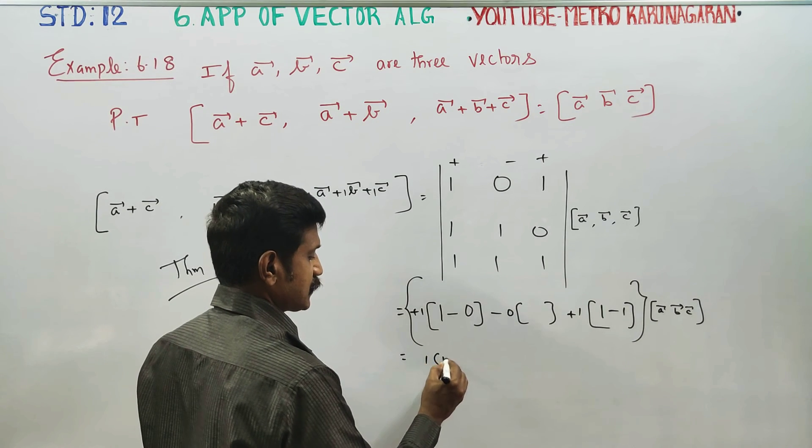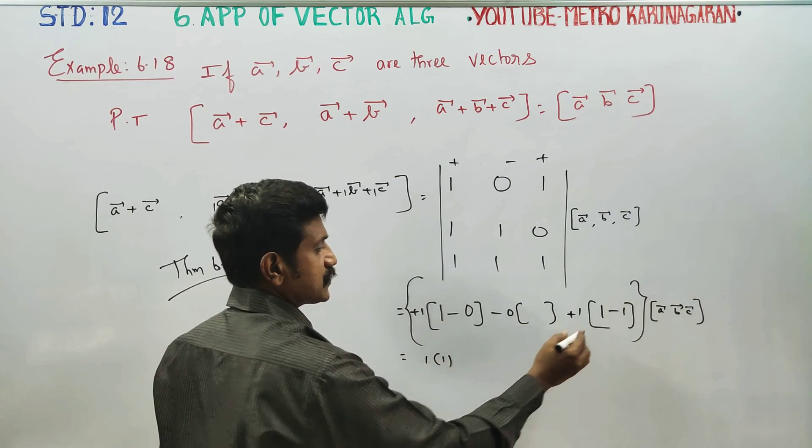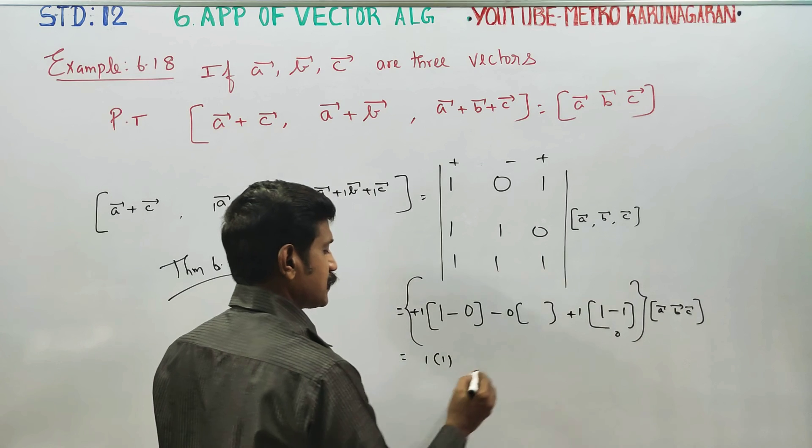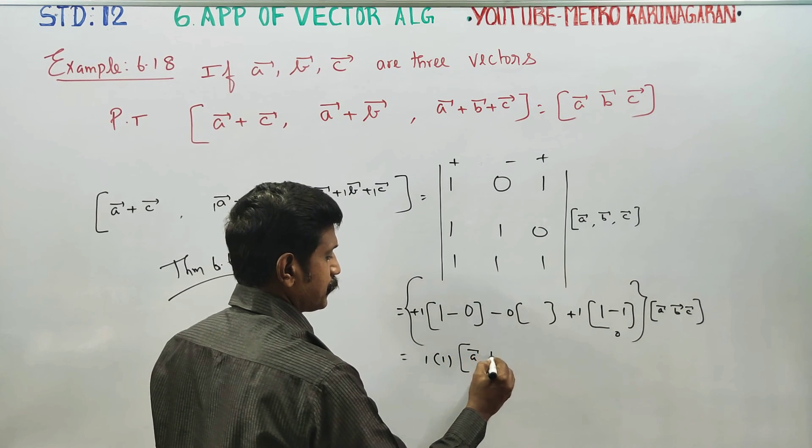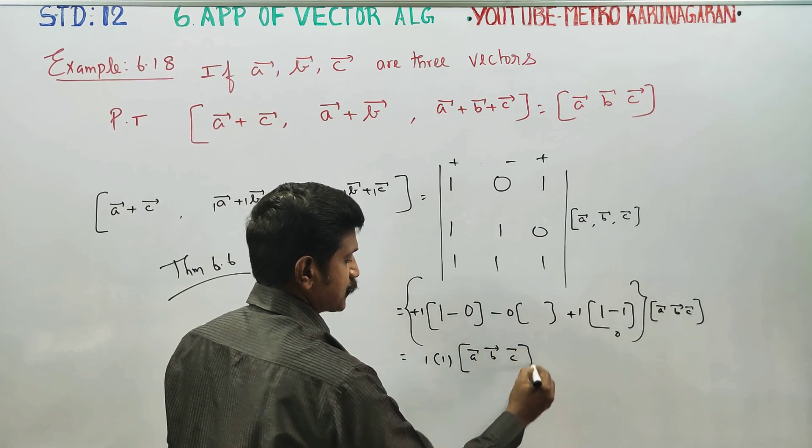1 minus 0 is 1. 0 into anything 0 is 0. 1 minus 1 is 0. 0 into 1 is 0. 0 into 0 is 0. Then into ABC box product.